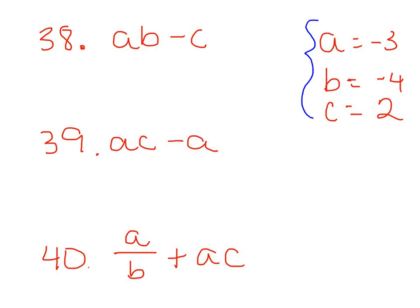So we'll start with number 38, and we are evaluating each expression, and we're given these values over here. So we will plug these in for our letters in our expression. A equals negative 3, and B equals negative 4. So that means we're going to say negative 3 times negative 4, and then minus what C is, and C is 2.